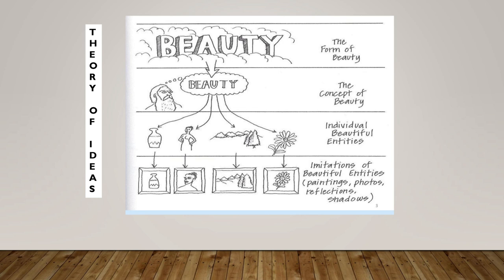This is Plato's first idea about his theory of ideas: art is twice removed from reality, or art is totally unreal. And from this theory of ideas, he goes on to define what poetry is.